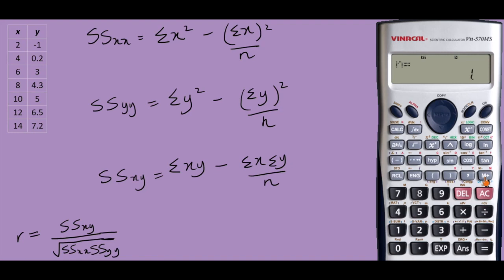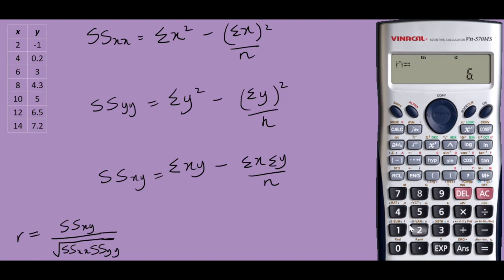We continue inserting all of our data until we are done. Next will be 4 comma 0.2, M+; 6 comma 3, M+; 8 comma 4.3, M+; 10 comma 5, M+; 12 comma 6.5, M+; 14 comma 7.2, M+. In total we have seven data points.